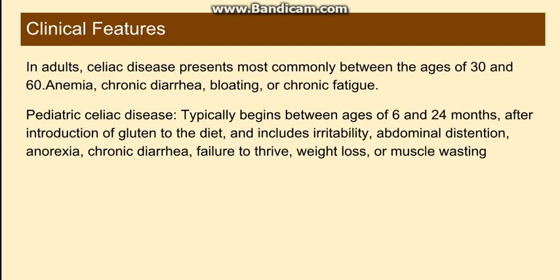Regarding clinical features, celiac disease can present in adults or in childhood. In adults, it mostly presents around age 30 to 60 years with symptoms like anemia, malabsorption, chronic diarrhea, bloating, and chronic fatigue; sometimes the disease remains silent. In pediatric celiac disease, symptoms mostly begin between ages 6 to 24 months after introduction of gluten to the diet, and include irritability, abdominal distension, anorexia, chronic diarrhea, failure to thrive, weight loss, and muscle wasting.